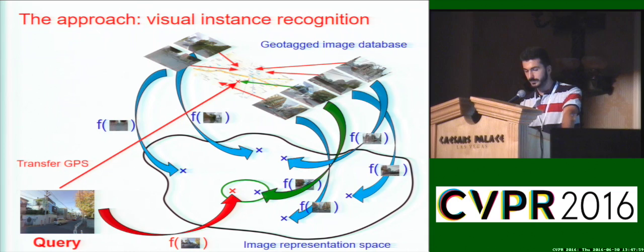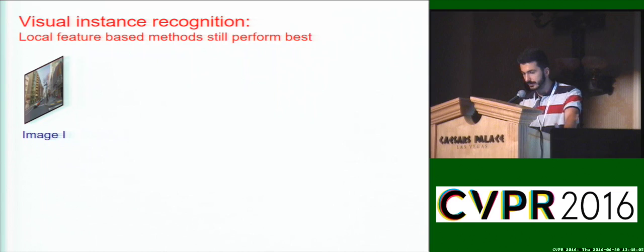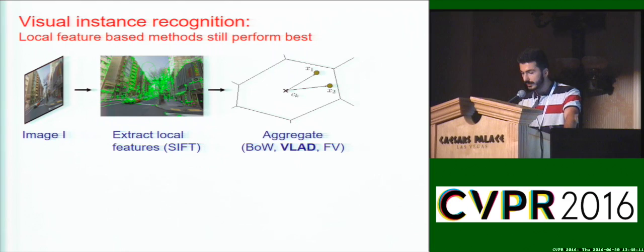Interestingly, local feature-based methods still perform the best on this task, where state-of-the-art approaches start by extracting local descriptors such as SIFT. These are then aggregated using bag-of-words, VLAD, or Fisher vectors to obtain the final image representation. There are many improvements to this basic pipeline, such as spatial verification and query expansion.